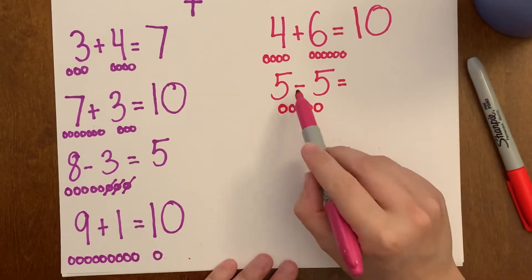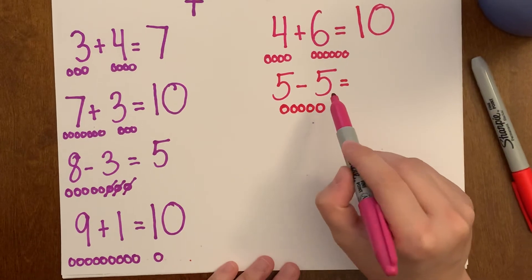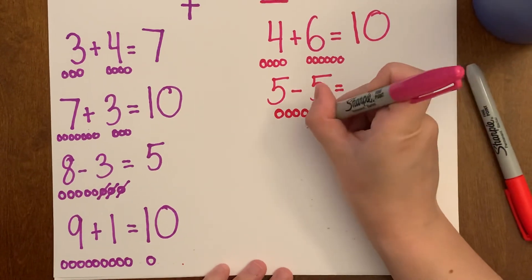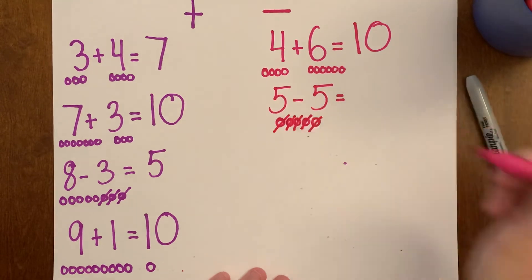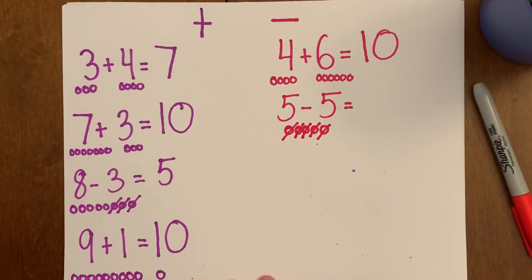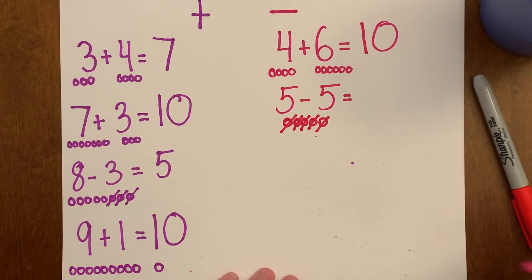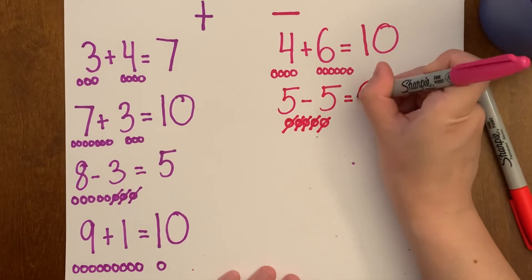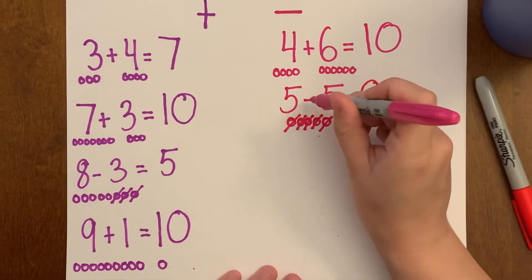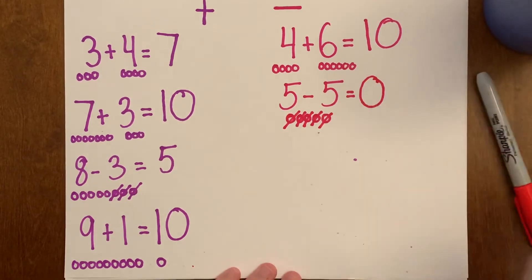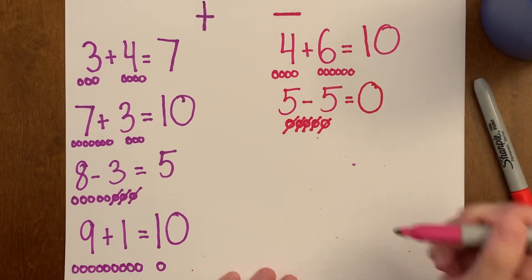And now this is telling me I have to take away five. So let's do that. One, two, three, four, five. How many circles do I have left? Zero. Yes. Five minus five equals zero. Okay, we'll do two more.